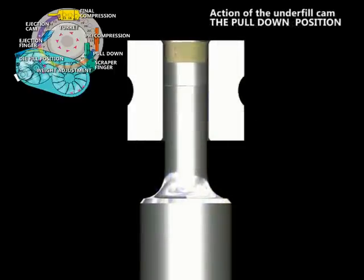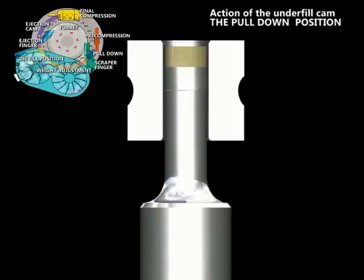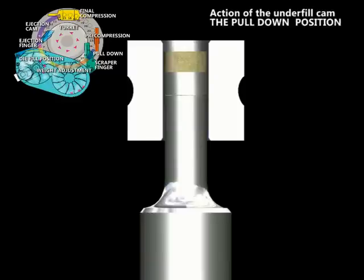The pull down position allows the lower punch to be pulled down slightly so that the top of the powder column in the die bore is below the surface of the die table. Simultaneously, the upper punch is lowered.